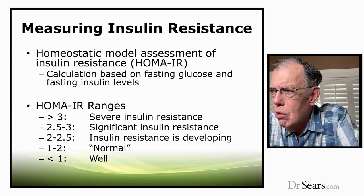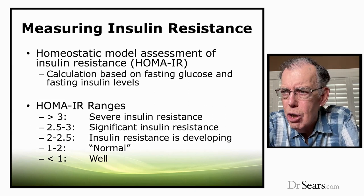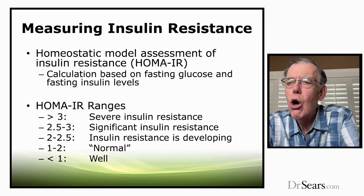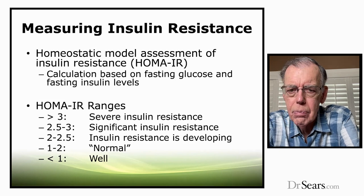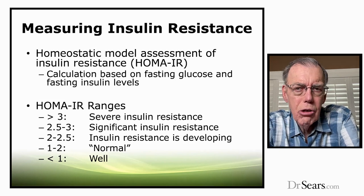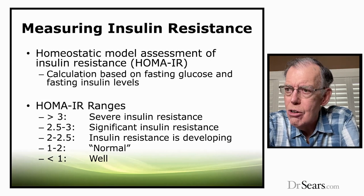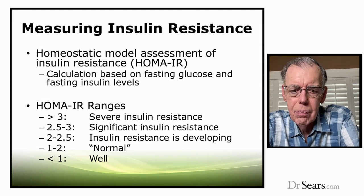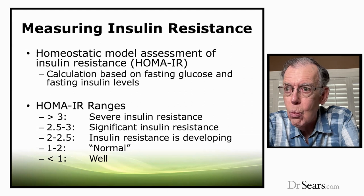How do we measure insulin resistance? It's a very simple test called the homeostatic assessment of insulin resistance, or HOMA-IR. You only need two blood tests: your fasting glucose and your fasting insulin levels. You put them in a simple equation and out comes a number. If the number is less than one, you have no insulin resistance — in other words, you're well. Between one and two, you're no longer well but not yet sick — kind of 'normal.' But beyond two, your metabolism is becoming increasingly disrupted.